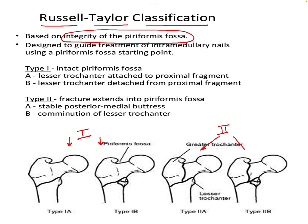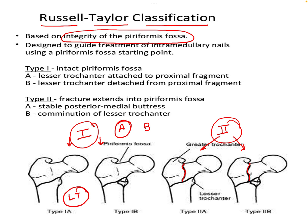In Type 2, the piriformis fossa is fractured — the fracture line extends into the piriformis fossa. These Type 1 and Type 2 groups are further divided into A and B depending on whether the lesser trochanter is involved. In Type 1A the lesser trochanter is intact, in Type 1B it is fractured. Similarly, in Type 2A the lesser trochanter is intact, and in Type 2B it is fractured.